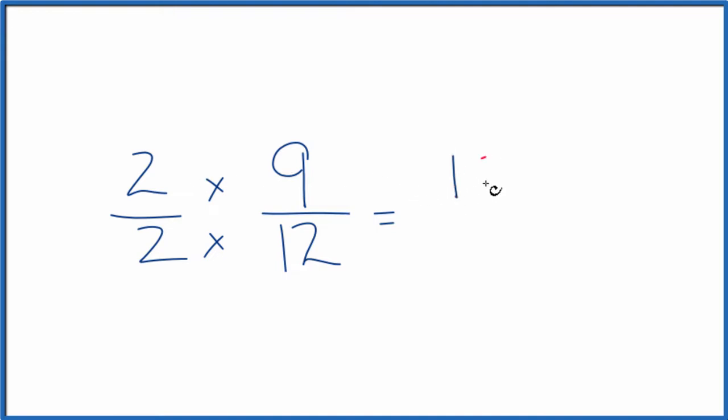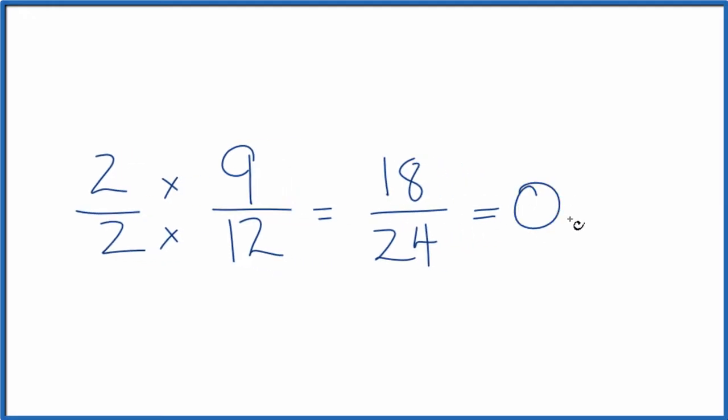2 times 9, that's 18. 2 times 12, that's 24. And this is an equivalent fraction for 9/12. If you divide 9 by 12 or 18 by 24, you get the same thing, 0.75. They're equivalent fractions.